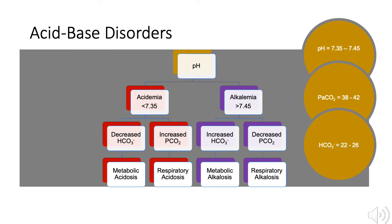In normal physiologic states, pH ranges from 7.35 to 7.45. The partial pressure of carbon dioxide in the blood ranges from 38 to 42 millimeters of mercury. Bicarbonate ranges from 22 to 26 milliequivalents per liter. A pH less than 7.35 results in an acidemia, and a pH greater than 7.45 results in an alkalemia.